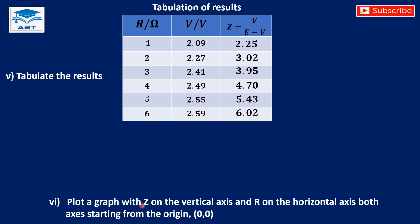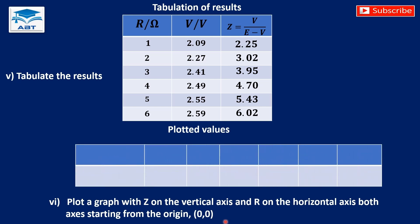Plot a graph with Z on the vertical axis and R on the horizontal axis, both axes starting from the origin. The values of R are whole numbers: 1, 2, 3, 4, 5, 6 — they can be easily plotted. For the values of Z, they are decimals. We can shift the decimal point and record them in scientific notation: for example, 2.25 is recorded as 225 × 10⁻².